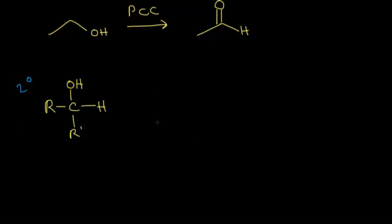For secondary alcohols, we can only get one product. When you oxidize a secondary alcohol, you're going to end up with a ketone. For a secondary alcohol, you could use either Jones or PCC. Either one of those two reagents will oxidize a secondary alcohol to a ketone. Let's take a look at an example.